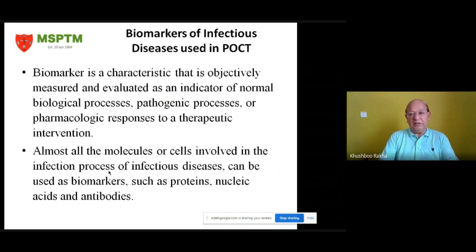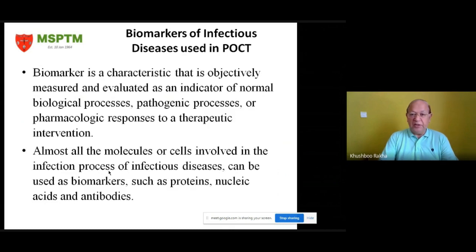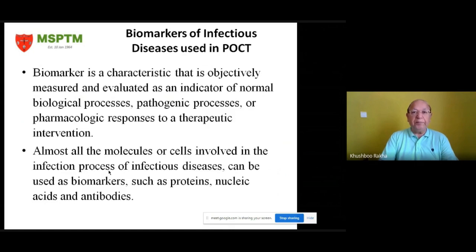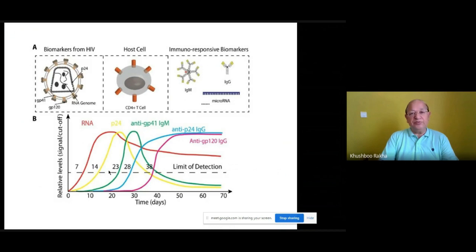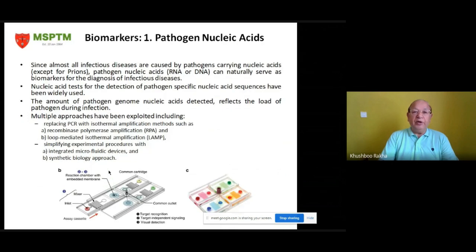Regarding the biomarkers of infectious diseases used in point-of-care test systems: a biomarker is a characteristic that is objectively measured and evaluated as an indicator of normal biological processes, pathogenic processes, or pharmacological responses to a therapeutic intervention. Almost all the molecules involved in the infection process of infectious diseases can be used as biomarkers, such as proteins, nucleic acids, and antibodies. This diagram shows biomarkers from the pathogen and host cells, as well as immune-response biomarkers being used lately.